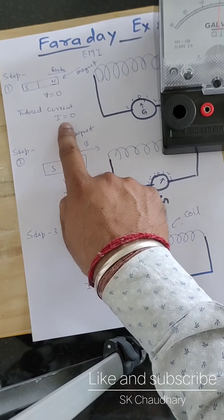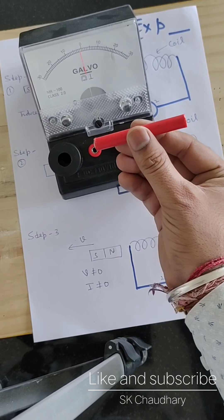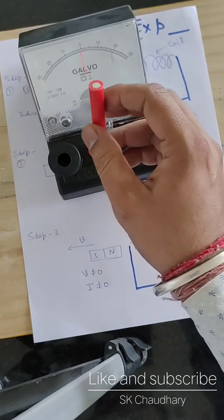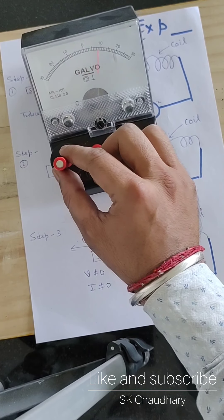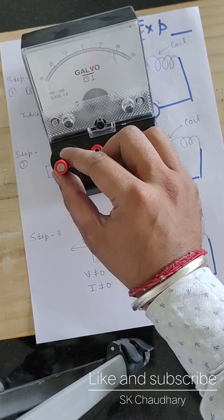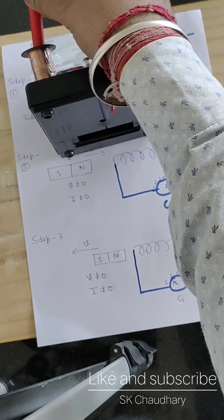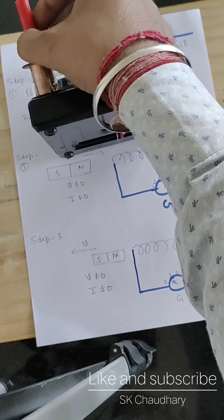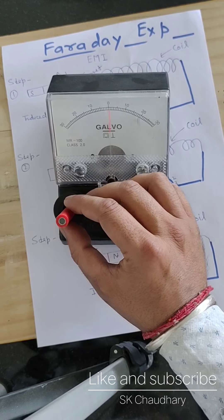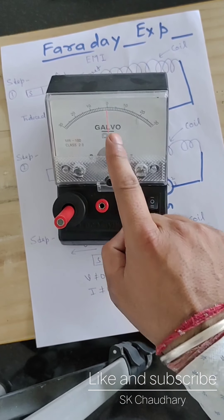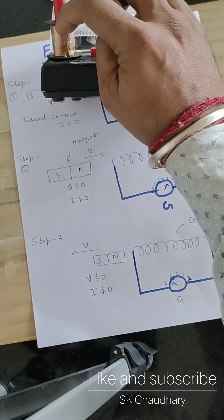That is what Faraday wanted to say — that induced current is present only when there is motion. Whenever the magnet is at rest, either inside the coil or outside the coil, there is no deflection in the galvanometer. If there is a relative motion between the coil and the magnet, there will be deflection. The pointer vibrates left and right as the magnet goes inside and outside. If we stop the motion of the magnet, there is no deflection and no induced current in the coil.